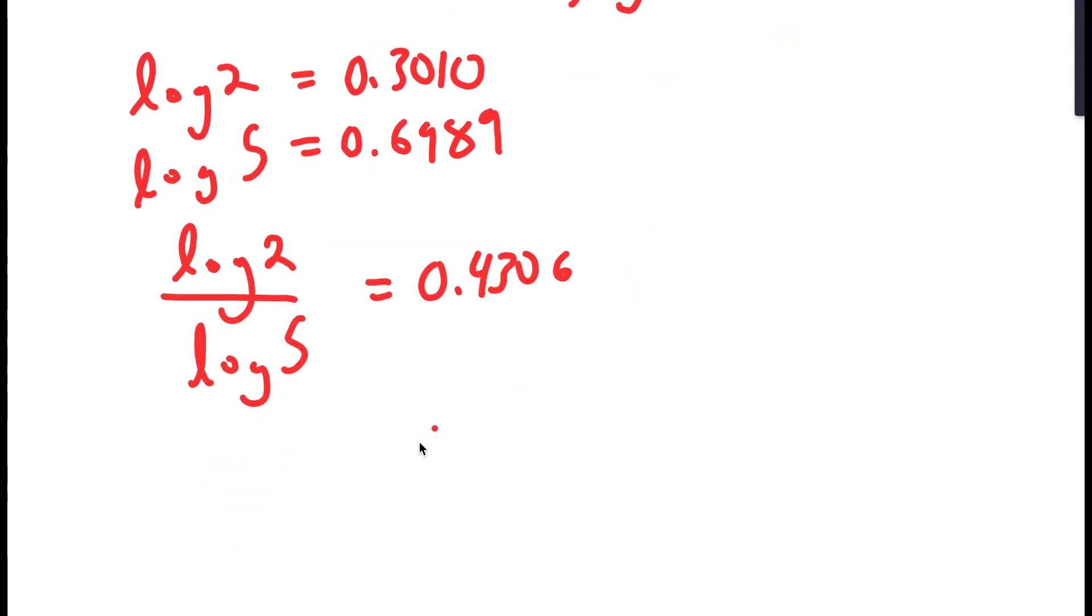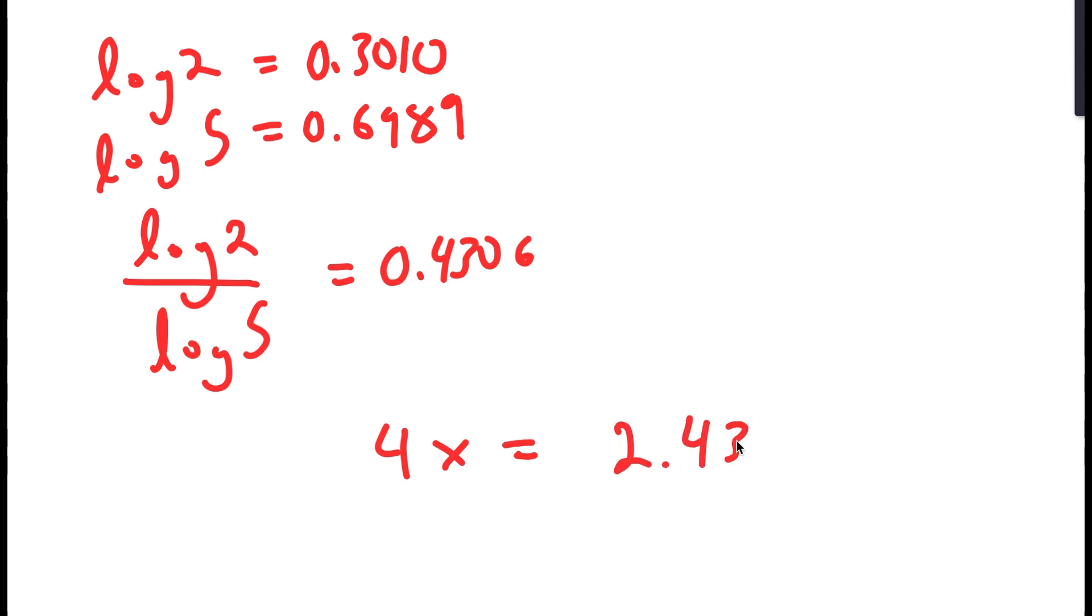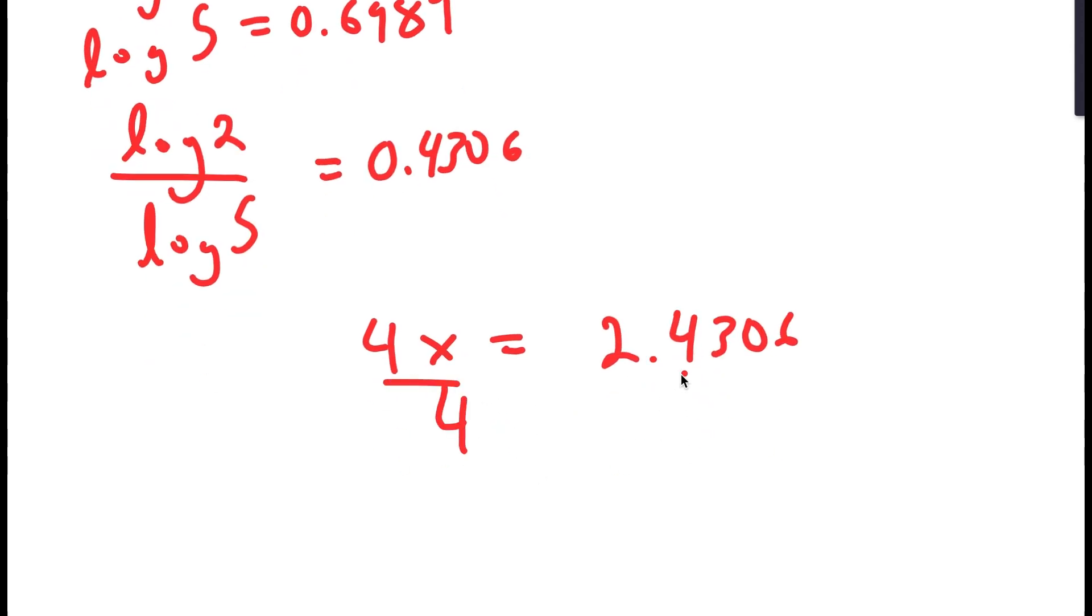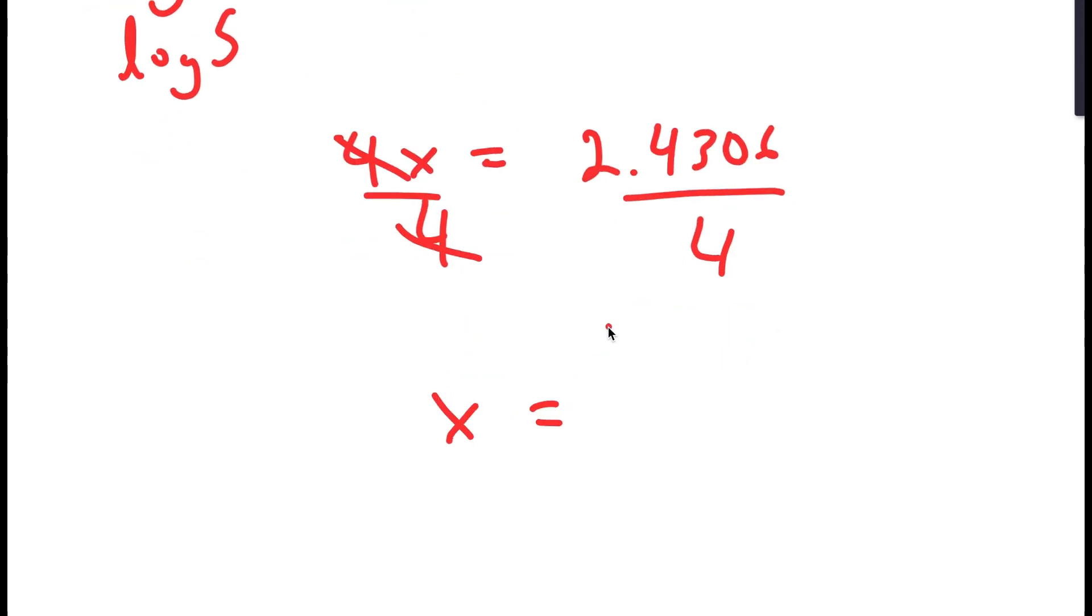So I get 4x is equal to 0.4306 plus 2, which is equal to 2.4306. So now, I'm finally going to divide both sides by 4. And I get x is equal to 0.6076. So this is my answer.